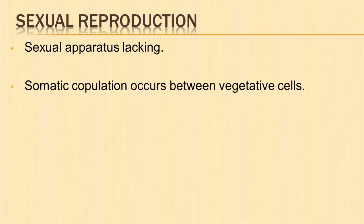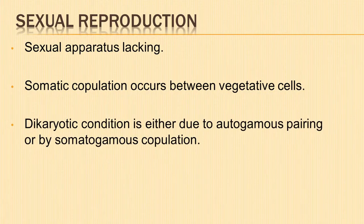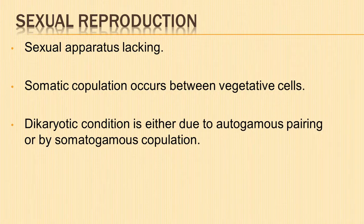Now we shall learn about the sexual reproduction in genus Peziza. The sexual apparatus is lacking in Peziza vesiculosa. The sexual process is extremely simplified. Somatic copulation occurs between certain vegetative cells at the time of reproduction. The dikaryotic condition, i.e. pairing of nuclei to form dikaryons, is brought about either by autogamous pairing or by somatogamous copulation between the vegetative cells of adjacent hyphae.